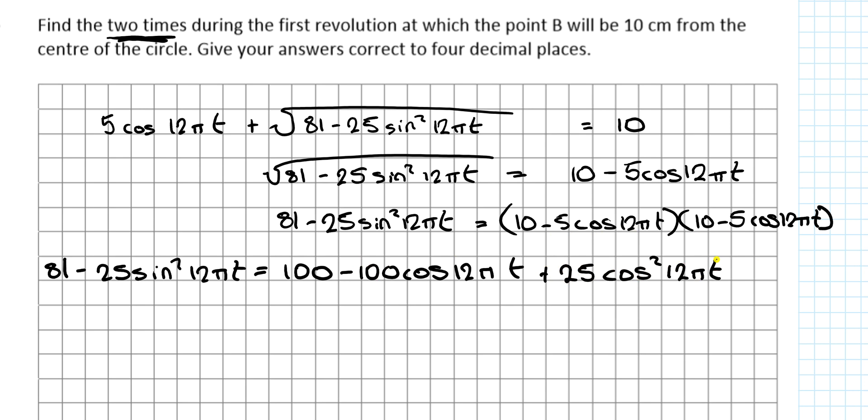Cos by cos is cos squared 12πt. And I don't multiply the 12πt by 12πt because it's the angle, it's part of the cos. Try and tidy up now as much as possible. I'm going to get minus 19 minus 25 sin squared 12πt equals minus 100 cos 12πt plus 25 cos squared 12πt.